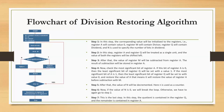Step 6: If the value of N is zero, we will break the loop. Otherwise, we go back to Step 2. Step 7 — the last step: The quotient is contained in Register Q and the remainder is contained in Register A.